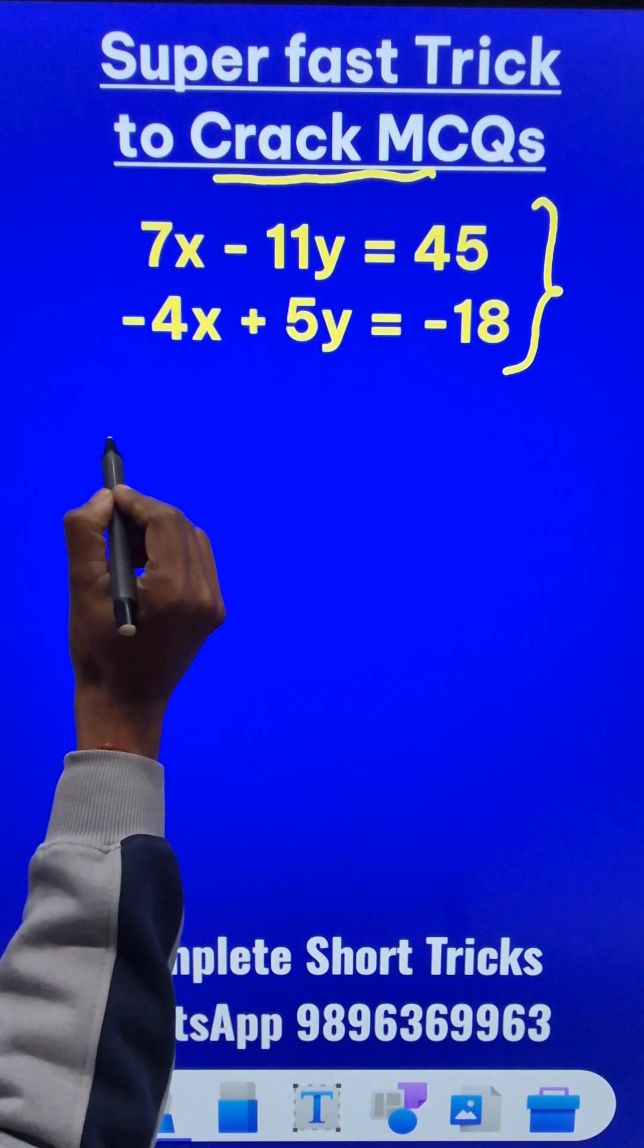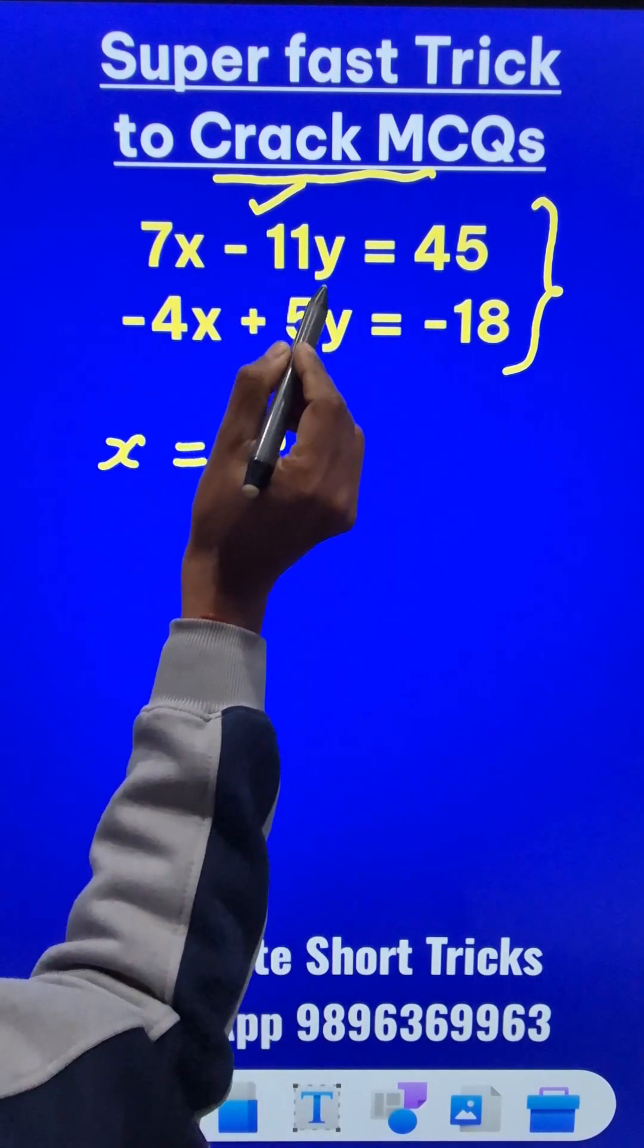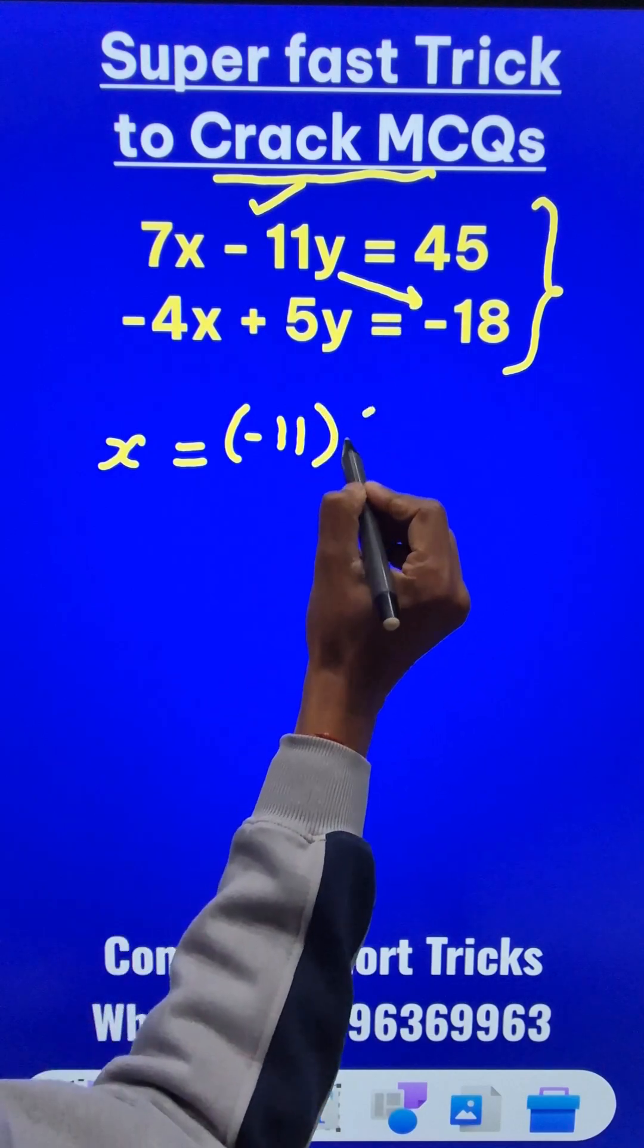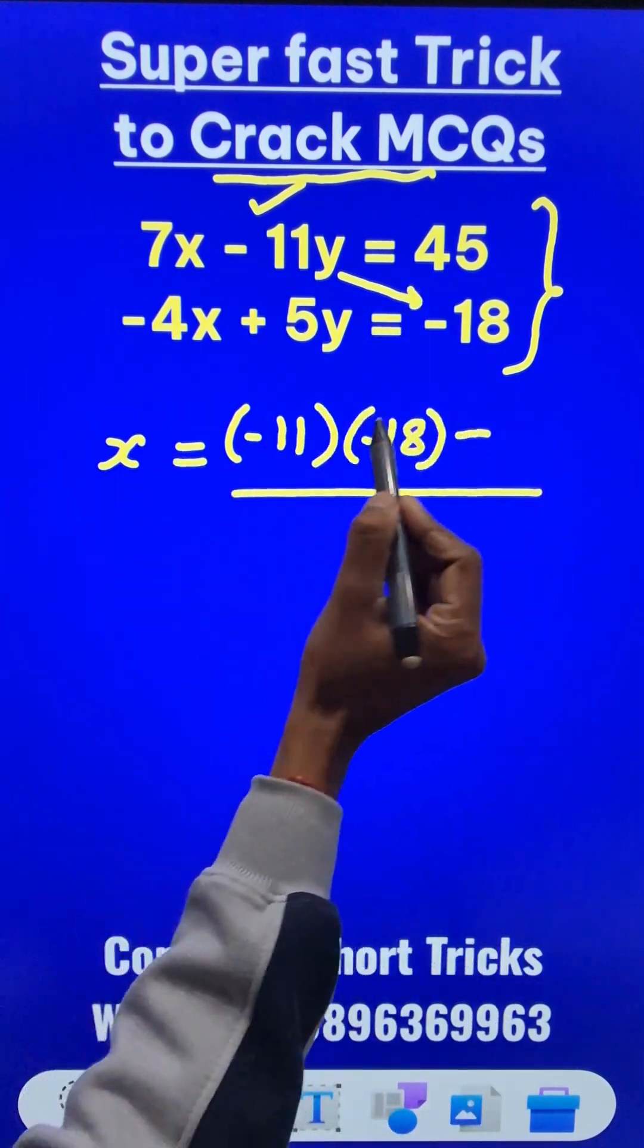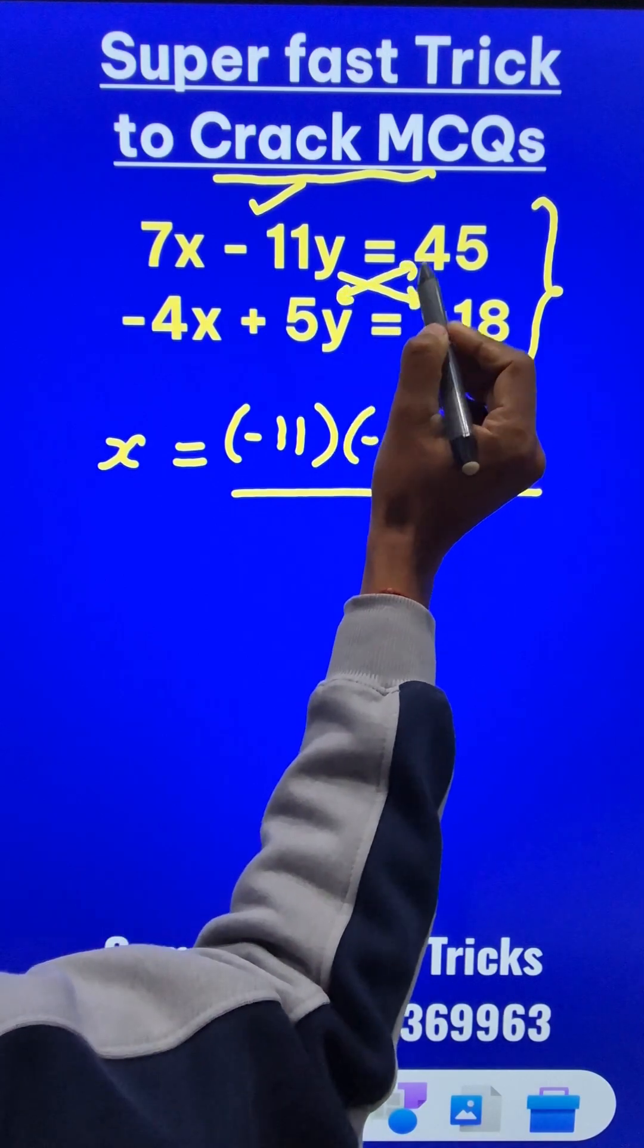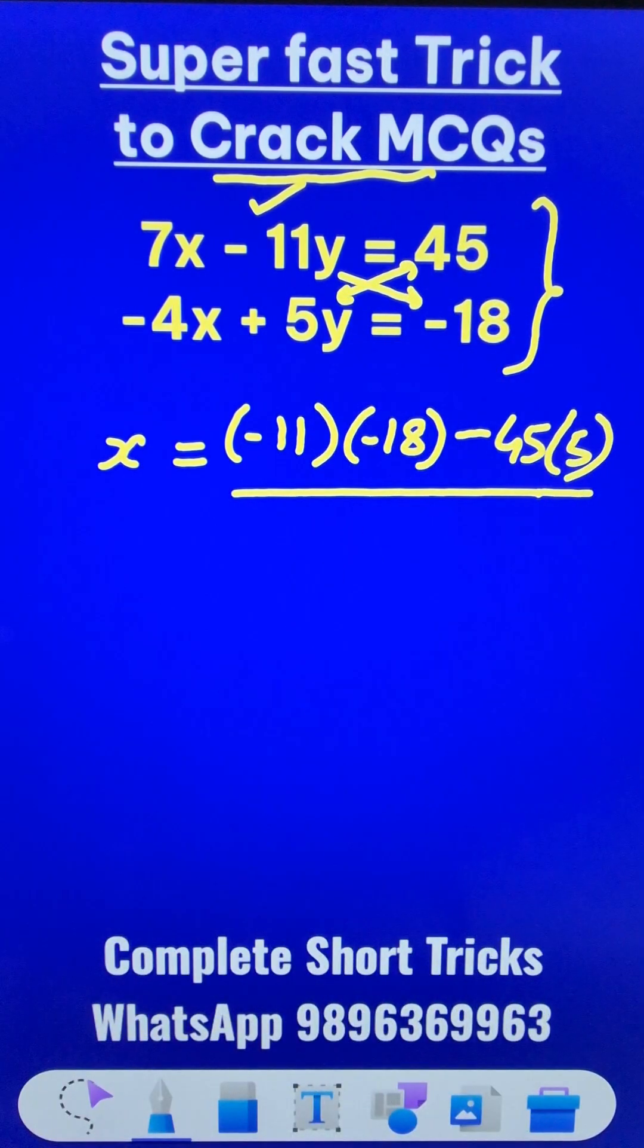So if you want to find the value of x directly, start with the coefficient of y here, negative 11, multiply it across like this, negative 18, and then subtract something from this, and that something is go the other way around, 45 times 5. So you have to write this here in the second part of the answer.